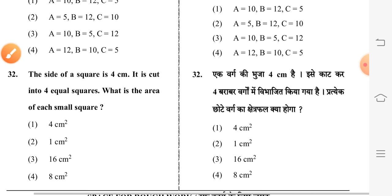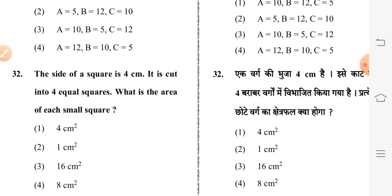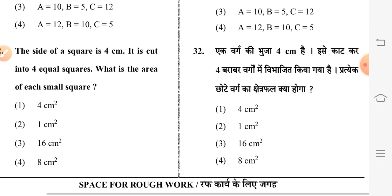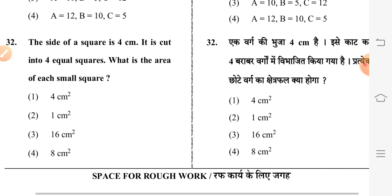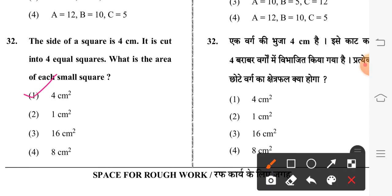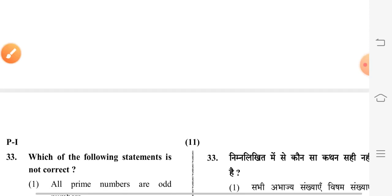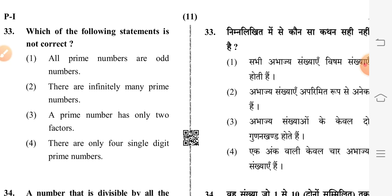Question 32: the side of a square is 4 centimeters. If it is cut into four equal squares, what is the area of each small square? First option is correct: 4 square centimeters. Question 33: which of the following statements is not correct? First option is correct: all prime numbers are odd numbers.